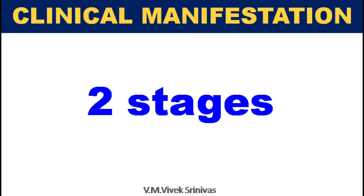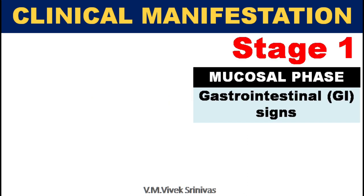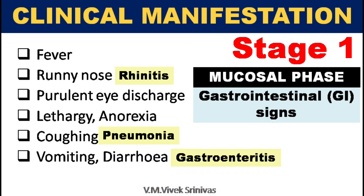In this infection, two stages of clinical manifestations are noticed. Stage 1: Mucosal phase, where gastrointestinal signs are observed. Symptoms like fever, runny nose due to rhinitis, purulent eye discharge, lethargy, anorexia, coughing due to pneumonia, vomiting and diarrhea due to gastroenteritis are observed in this stage.